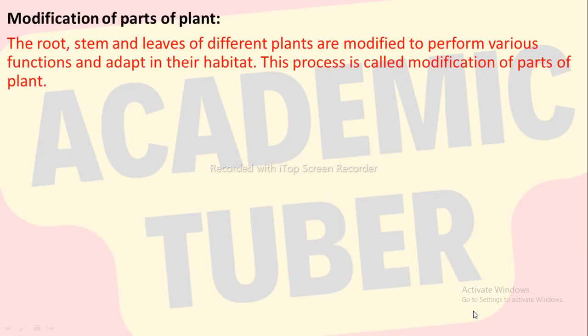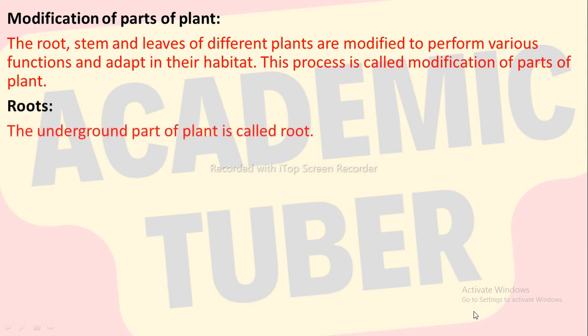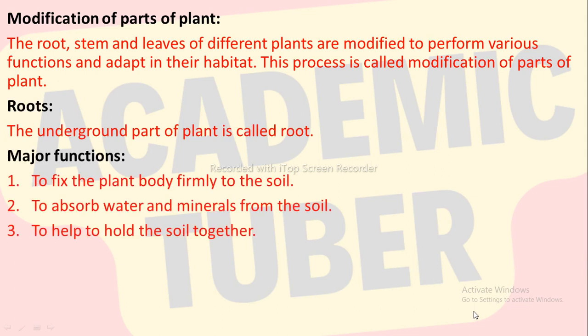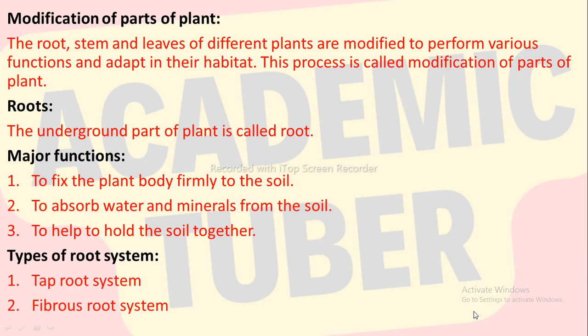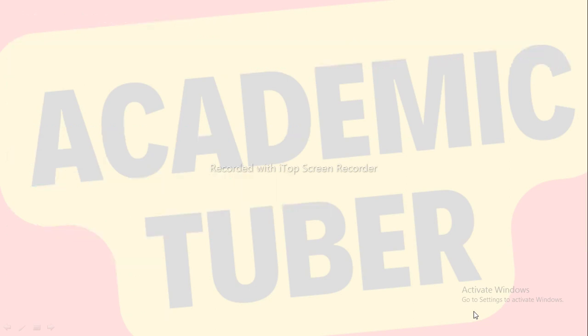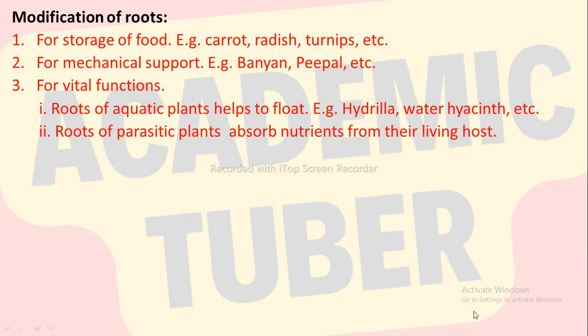Modification of parts of plants. The root, stem and leaves of different plants are modified to perform various functions and adapt in their habitat. This process is called modification of parts of plants. Root — the underground part of plant is called root. The major functions of root are to fix the plant body firmly to the soil, to absorb water and minerals from the soil, and to hold the soil together. There are two types of root system: tap root system and fibrous root system. Roots of plants are modified for storage of food, for example carrot, radish, turnips, etc. For mechanical support, for example banyan, peepal, etc., and for vital functions.